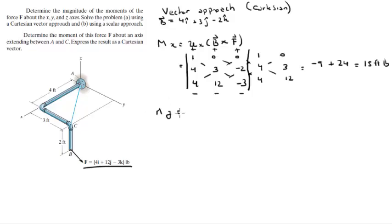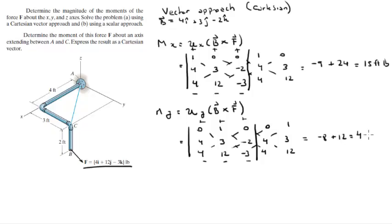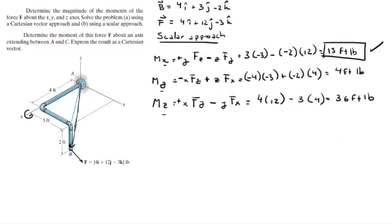For My, the unit vector in y is [0, 1, 0]. Building the matrix with B = [4, 3, -2] and F = [4, 12, -3], then redrawing columns. Positive diagonals: 1 × (-2) × 4 = -8. Negative diagonals: (-3) × 4 × 1 gives +12. So -8 + 12 = 4 foot-pounds, which matches our scalar approach.